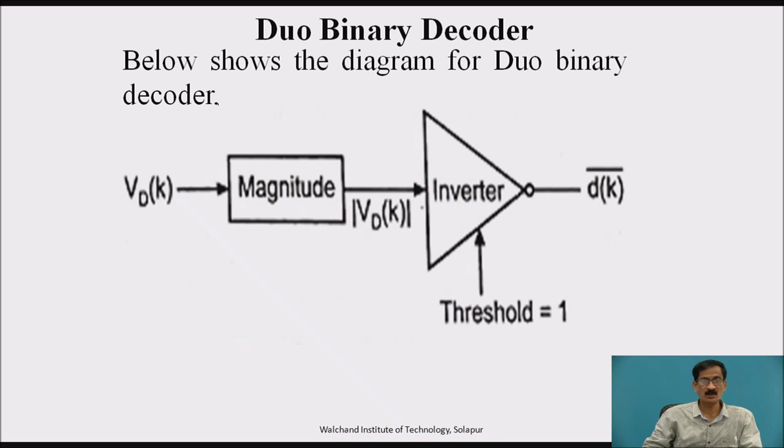Duobinary decoder. Now, let us come to the transmitter side. Once the v d k signal which is sent by transmitter, it is now available at the receiver section composed of magnitude circuit and inverter circuit. Here, v d k is converted into a mod of v d k that is plus 2 and minus 2 is converted to 2 volt. Then, it is given to an inverter which is having a threshold 1 and will give the invert of the d k signal.